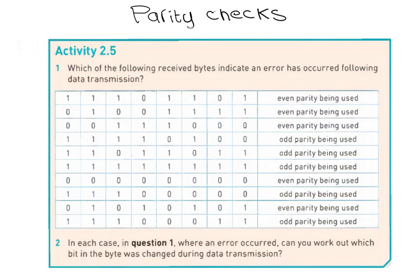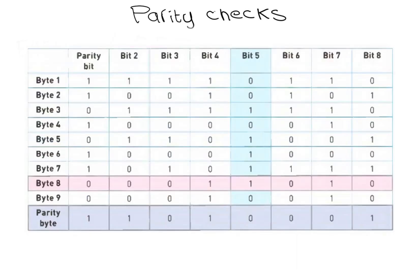One of the ways around this problem is to use parity blocks. In this method, a block of data is sent and the number of 1 bits are totalled horizontally and vertically. In other words, a parity check is done in both horizontal and vertical directions. As the following example shows, this method not only identifies that an error has occurred, but also indicates where the error is. In this example, 9 bytes of data have been transmitted. Agreement has been made that even parity will be used.